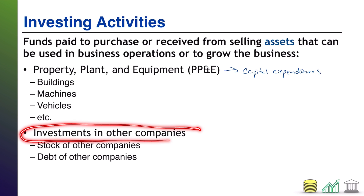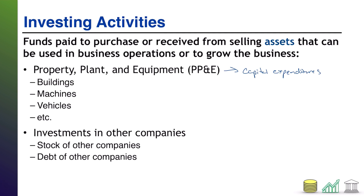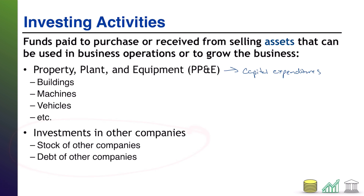You can also grow your business by investing in other companies — not physically in your own expansion, but getting a return or expanding through another company. That means you can buy the stock of other companies, expanding ownership, or invest through the debt of other companies. When you lend them money, you will earn interest — a return on investment, or ROI. Whether you're dealing in the stock or the debt of other companies, those are considered investing activities. Not to be confused with your own investors or your own stock — those are ways to finance your business and are financing activities.